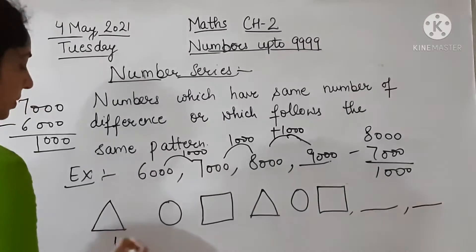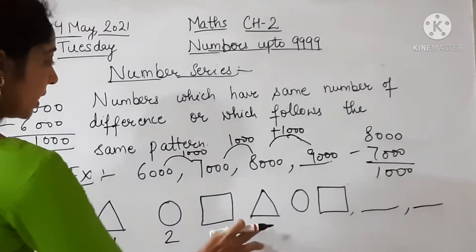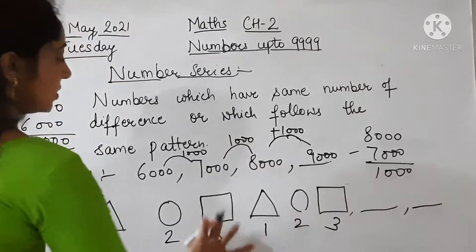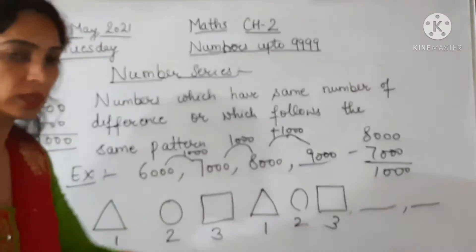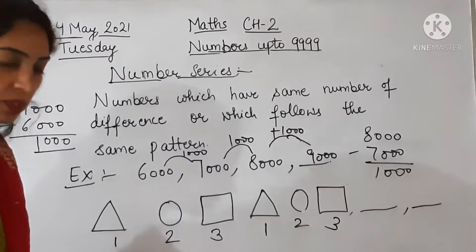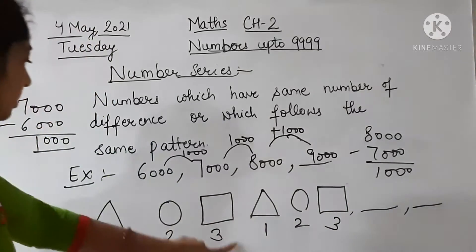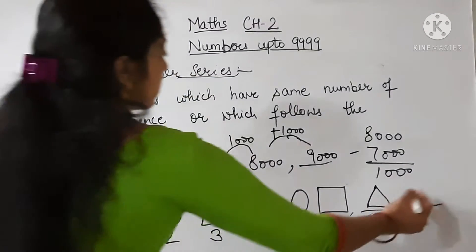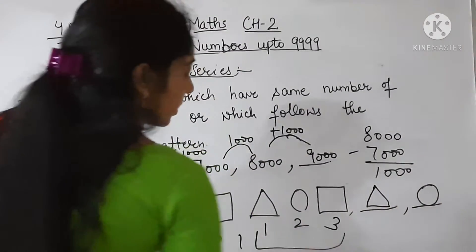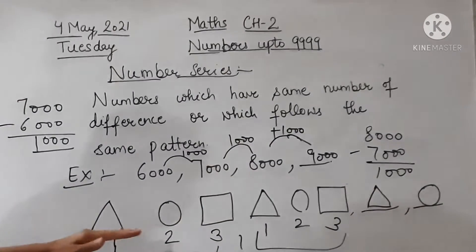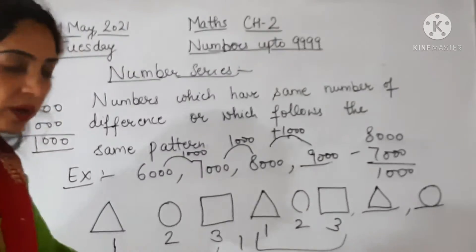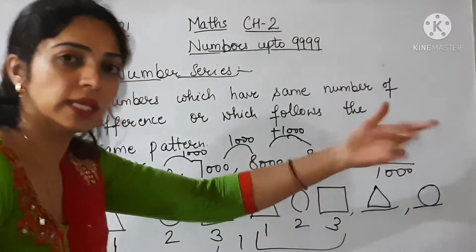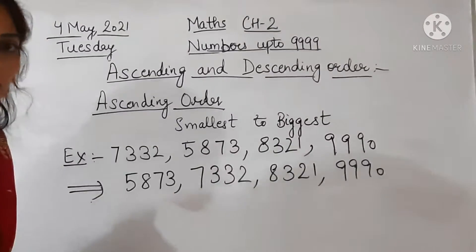Here is another example of a pattern. First shape is a triangle, then circle, then square, then again triangle — phir se first shape. Then circle, then square. So one, two, three — one, two, three. After the third shape, again the first shape comes. After the dash, triangle will come, then circle. Ye kya hai? Ek pattern follow kar raha hai — square ke baad phir triangle, then circle, then square.